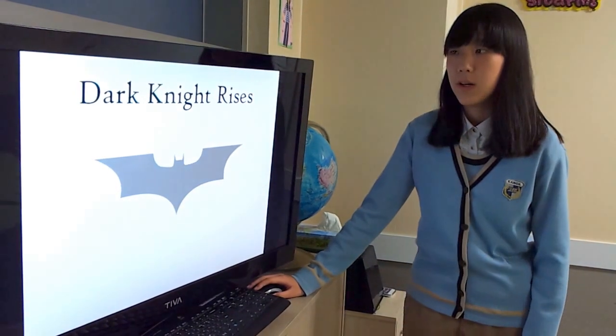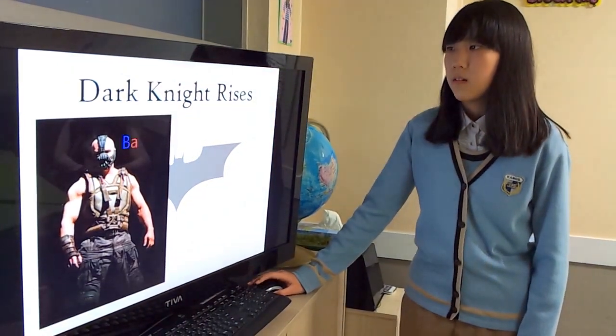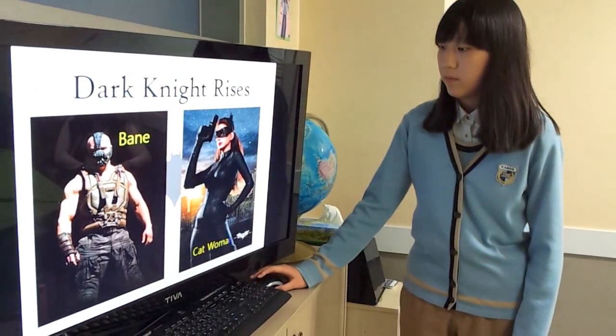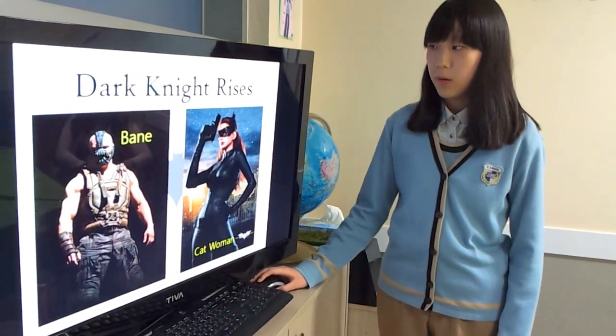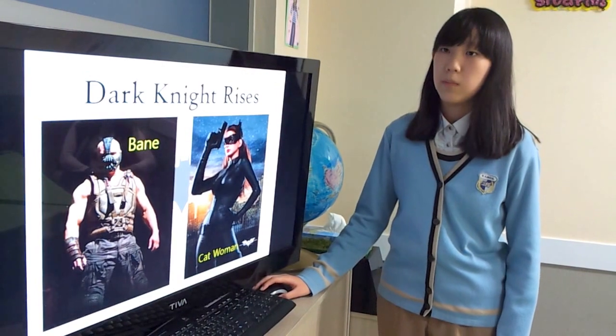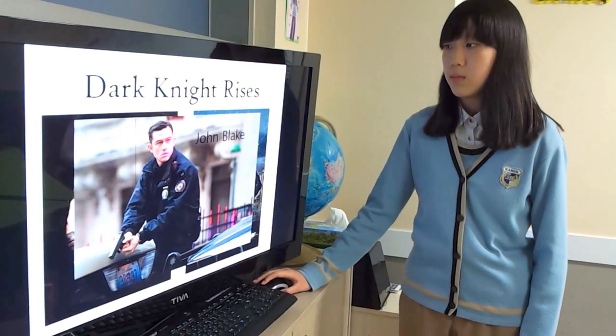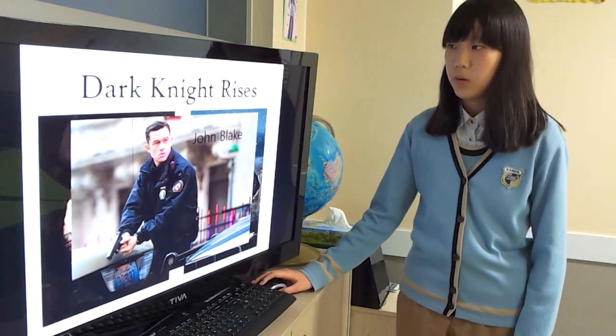Dark Knight Rises: New villain Bane appeared. Catwoman was once a robber, but she became Batman's ally finally. Policeman John Blake is also a very important character.